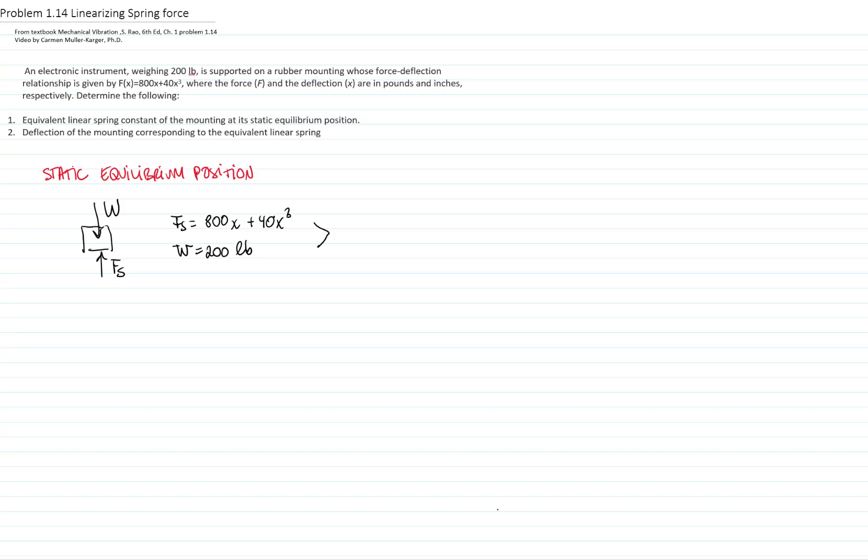Therefore, those two are equal, and we have that 40x cubed plus 800x equals 200. We want to find the equilibrium position, so we will solve the polynomial. There are many ways to solve this polynomial. I like to do it as a recursive solution, so I'm going to solve for x.